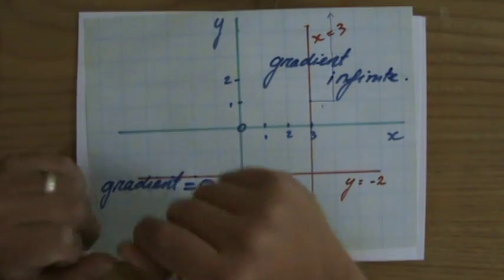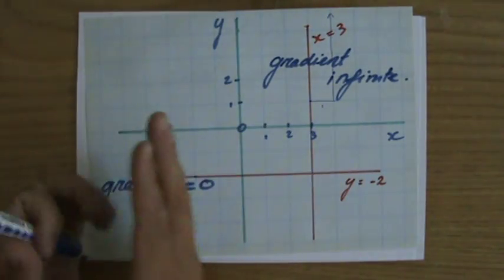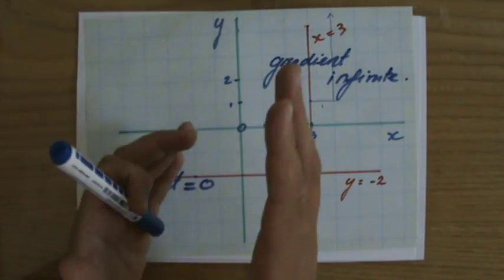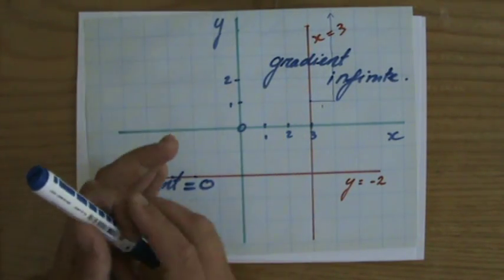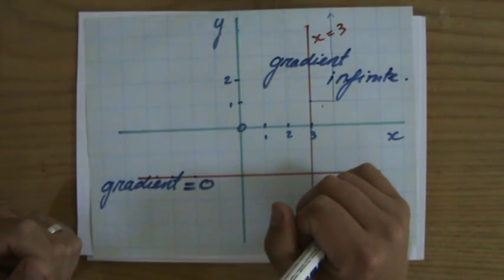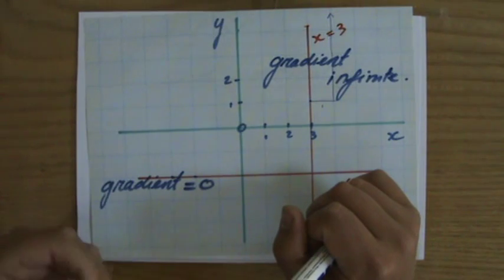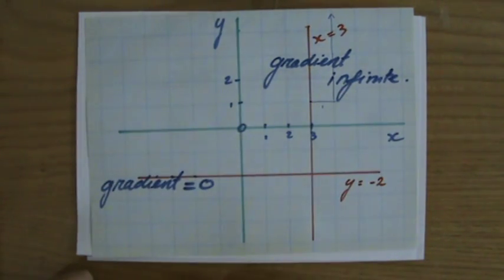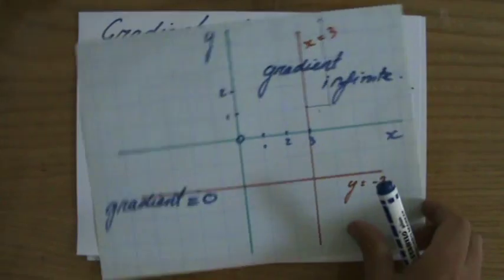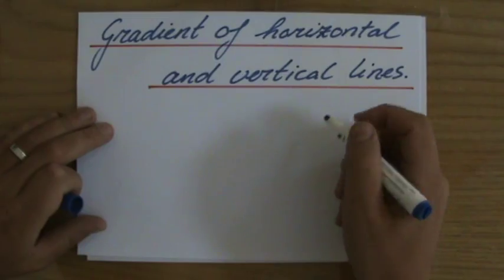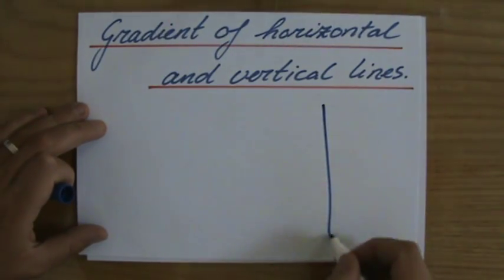Now, if you truly understand what gradient is — which is: if you go one step to the right, how many steps do you go up or down? If you understand that that is the definition of a gradient, that describes the steepness of a line, then you really don't have to remember this. Because if somebody asks me what is the gradient of a horizontal line, I'm not going to try to remember these things.